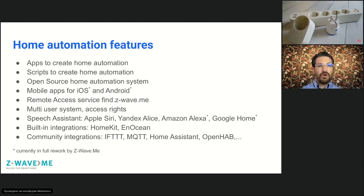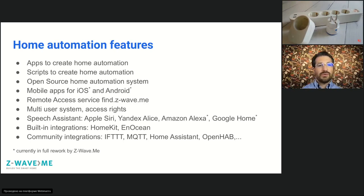Currently both iOS and Android applications are under full rework, and the Android app is already at the approval stage with Google — we hope it will be published by mid next week. Z-Way additionally has a remote access system through FindZWay.me, which allows you to control your home automation from everywhere. This is also very important for integration with cloud-to-cloud services like IFTTT and others.